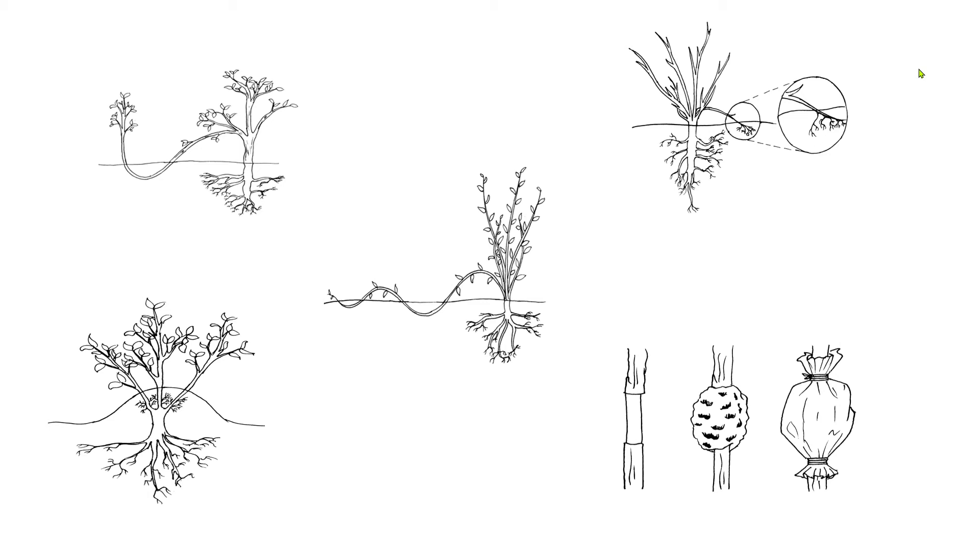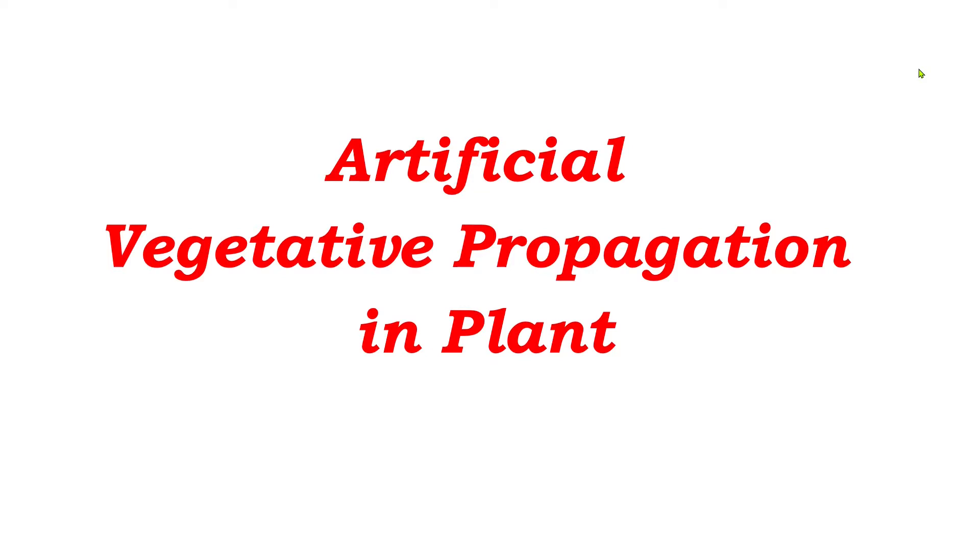Today we are going to study about layering - different types of layering. For example, simple layering, compound layering, tip layering, mound or stool layering, and air layering. We are going to study about this. It comes under artificial vegetative propagation in plants.